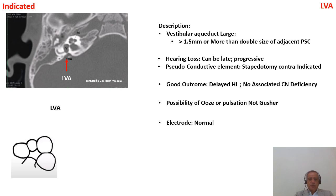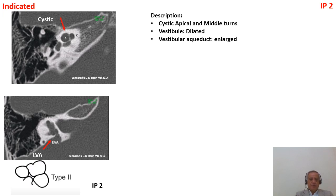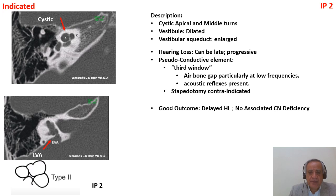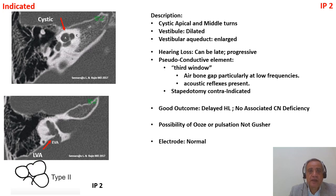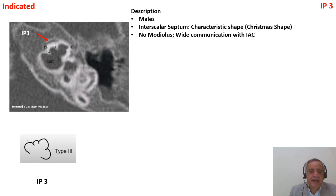IP2 is similar to large vestibular aqueduct but the apical and middle turns are cystic and confluent, and there is a dilated vestibule. Hearing loss can be late or progressive. There is a pseudo-conductive element, so stapedotomy is contraindicated. Outcome is good — delayed hearing loss and no cochlear nerve deficiency. Possibility of ooze or pulsation, not gusher. Electrode is normal and the cochlear nerve is usually present.